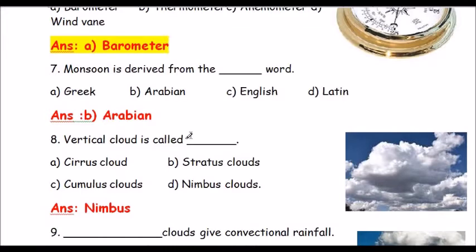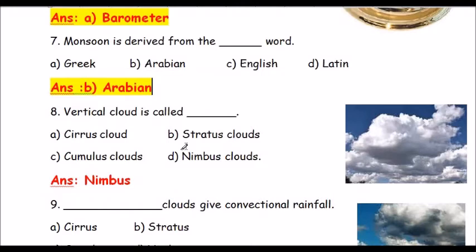Question number 7: Monsoon is derived from which language's word? Options are a) Greek, b) Arabian, c) English, d) Latin. It is derived from the Arabic word 'mausim'. The option is b) Arabian. Monsoon is derived from the Arabian word mausim.